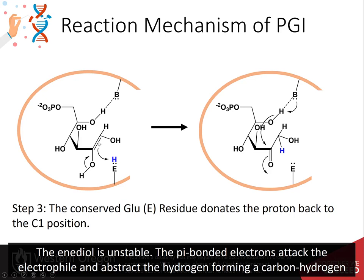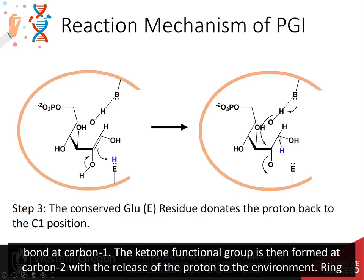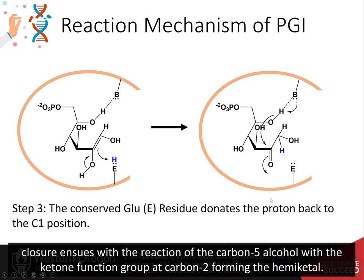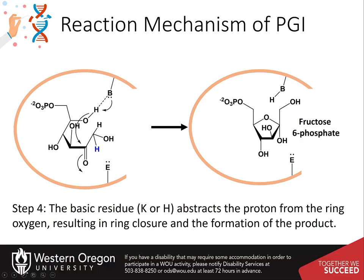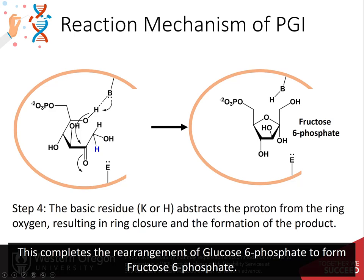The enediol is unstable. The pi-bonded electrons attack the electrophile and abstract the hydrogen, forming a carbon-hydrogen bond at the C1 position. The ketone functional group is then formed at the C2 position with the release of a proton into the environment. Ring closure ensues with the reaction of the carbon-5 alcohol with the ketone functional group at carbon-2, forming the hemiketal. This completes the rearrangement of glucose 6-phosphate to form fructose 6-phosphate.